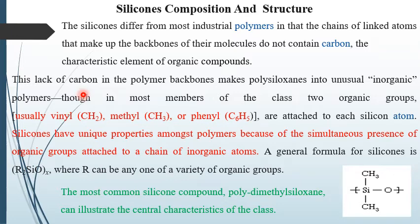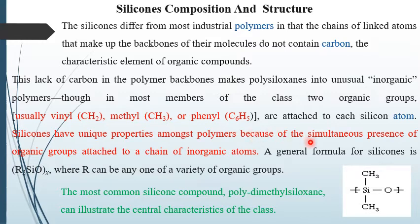Although they are inorganic polymers, most of the members have two organic groups — usually methyl and phenyl — attached to the silicon atom. Silicones have unique properties among polymers because of the simultaneous presence of organic groups attached to a chain of inorganic atoms. Inorganic groups are also associated with organic groups, which is why they are a unique type of polymer with different properties.